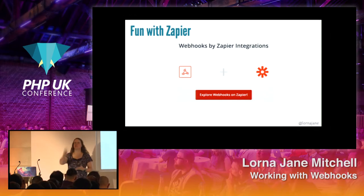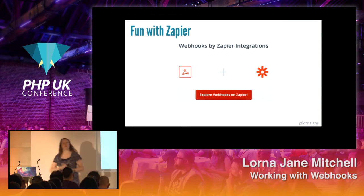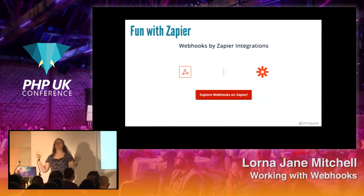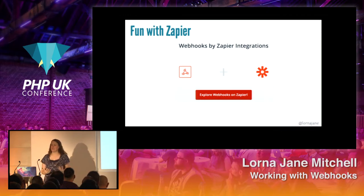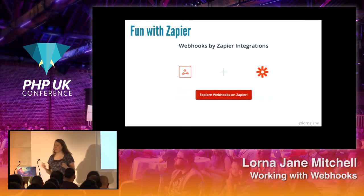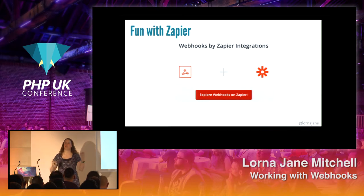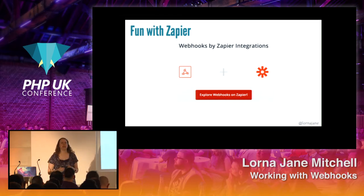Zapier is a brilliant way of integrating lots of different events: something happens on Dropbox, take a copy, upload it here; when you tweet this, do that, add it to a Google Doc, somebody mentions you, put it over here. There are lots and lots of ways we can use webhooks to exchange data between systems and allow systems to react to one another.